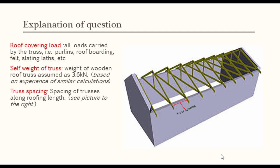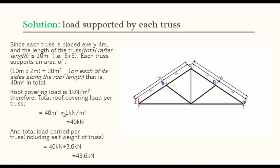Truss Spacing: Spacing of Trusses Along Roofing Length. The spacing of the truss along the roof length will better help us understand how we can analyze the roof trusses. For instance, if we want to analyze a single roof truss, it is logical for us to say that a single roof truss will support an area load of 2 m width along each of its sides. Since each truss is placed every 4 m...